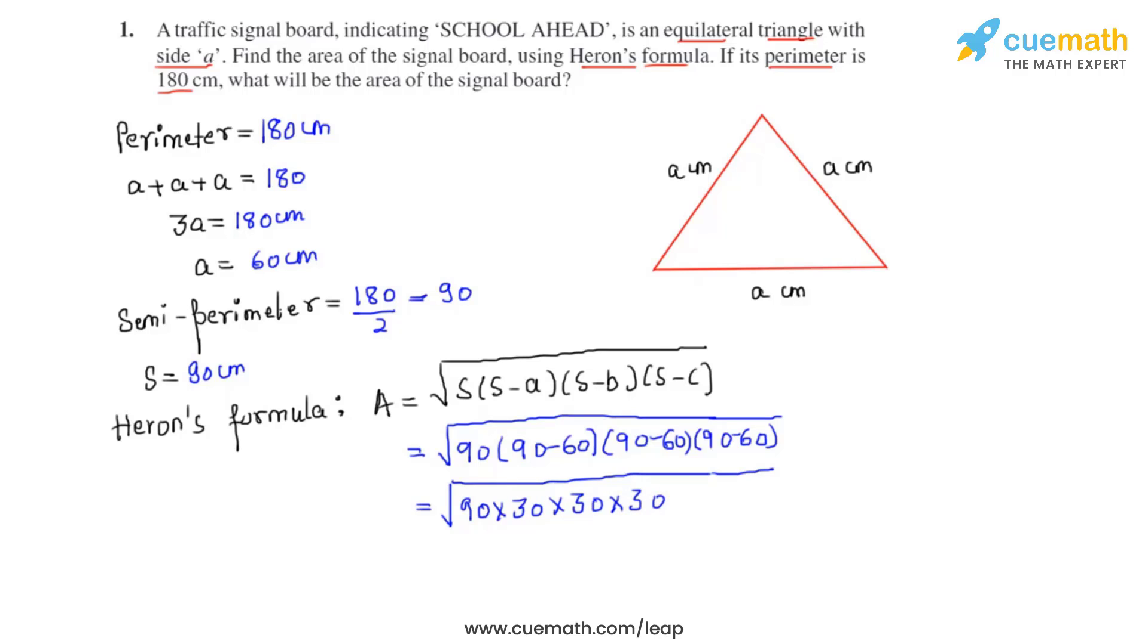So we will get the area of the traffic signal board to be equal to 900 root 3 centimeter square and that is the correct answer for this question.